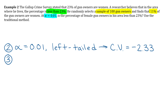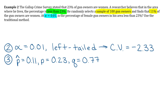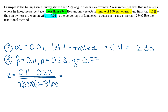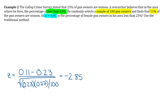Step three: p-hat is your sample proportion. The problem says 11% were female gun owners in the sample, so p-hat is 0.11. P is what we wrote in step one: 0.23. Q is 1 minus 0.23, which equals 0.77. Plugging everything into the z-formula: 0.11 minus 0.23 all over the square root of 0.23 times 0.77 divided by 100. Type that in carefully — you should get a z-value of negative 2.85.